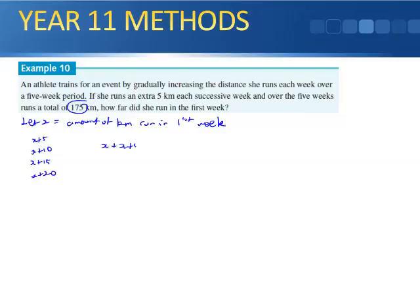So I've got x plus x plus 5 plus x plus 10 plus x plus 15 plus x plus 20 equals 175. So collecting like terms: 1, 2, 3, 4, 5. So we get 5x.